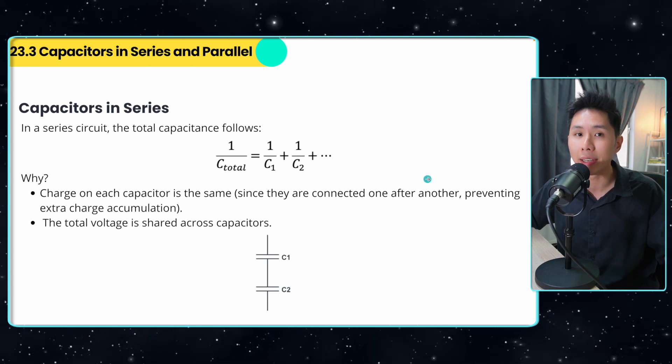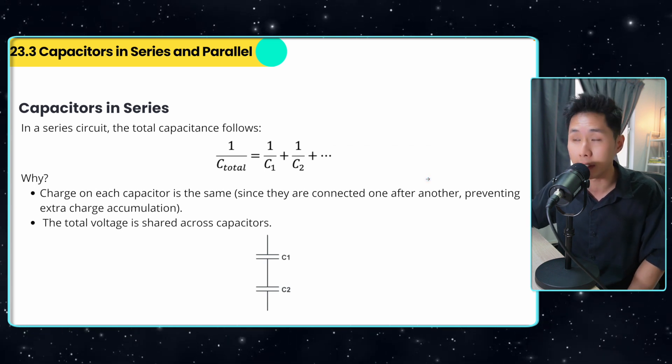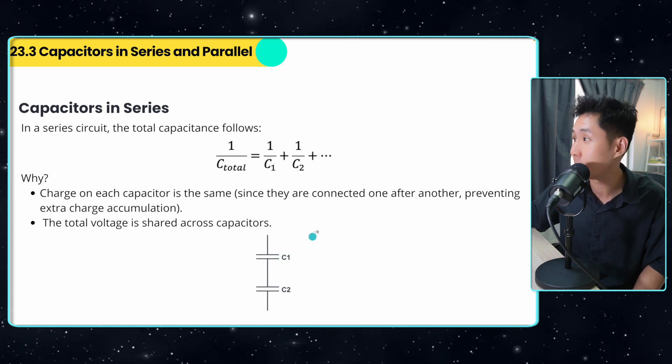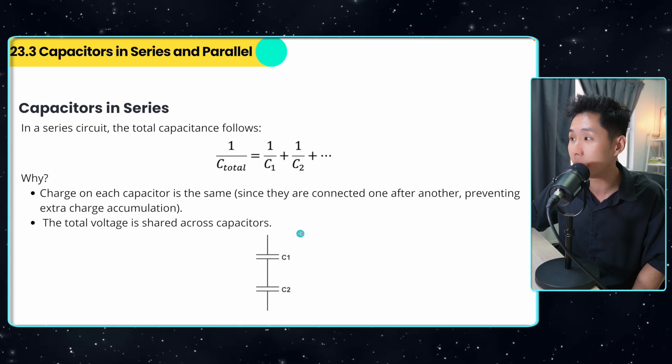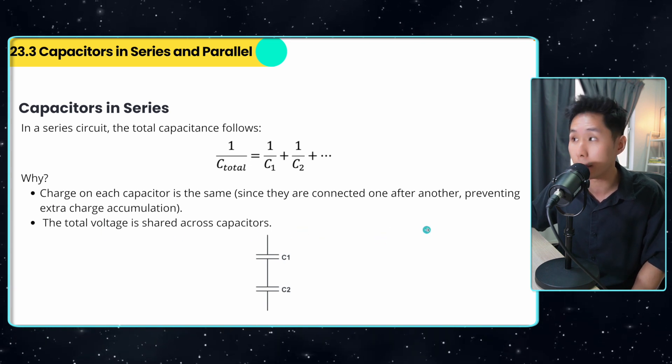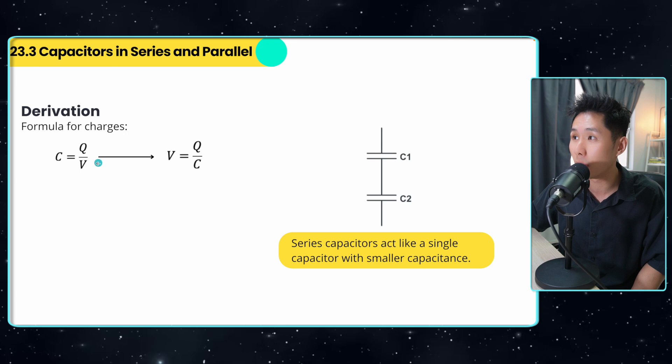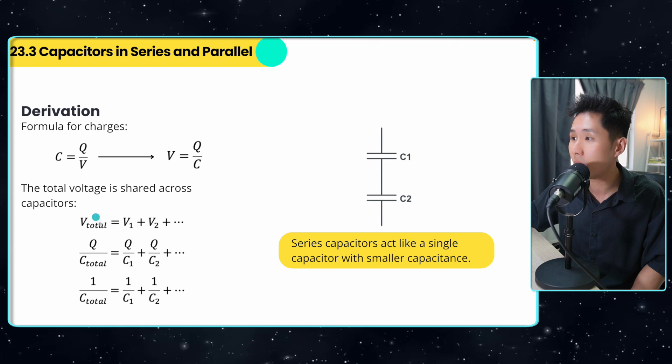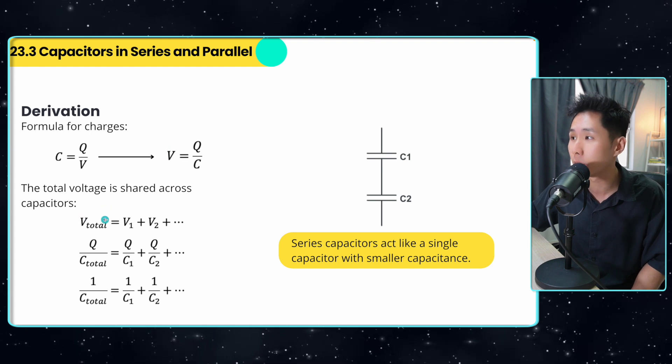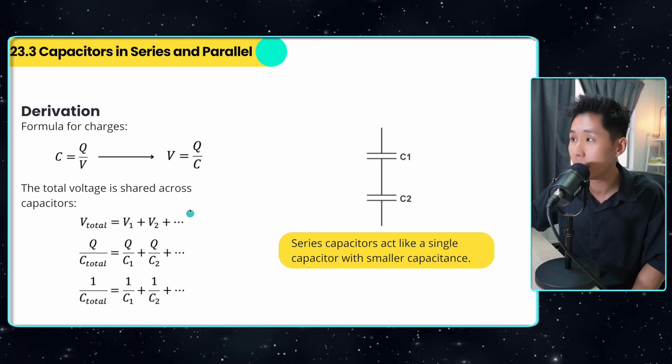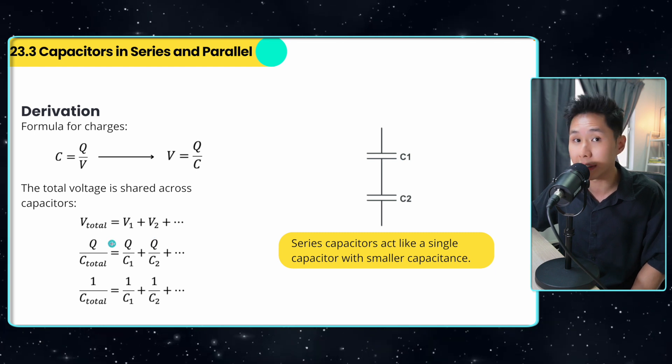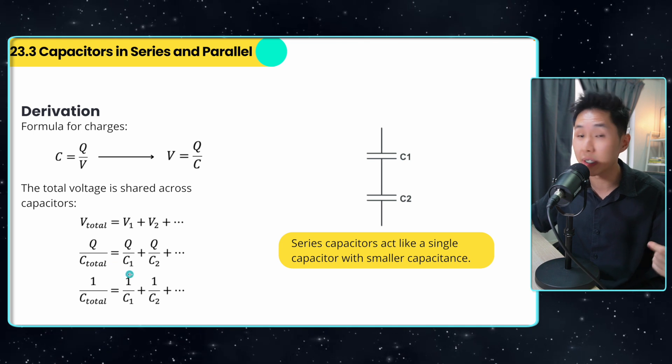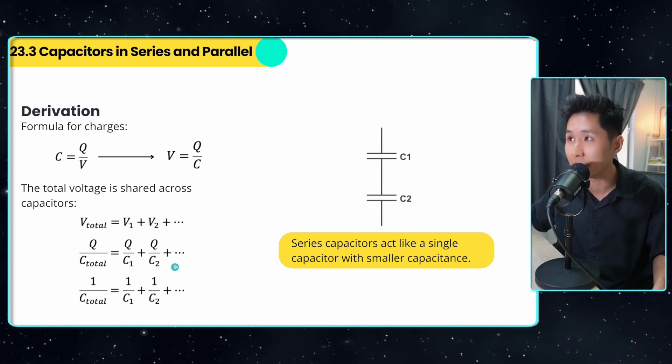What is slightly complicated is when capacitors are arranged in series. When they are arranged in series, the charge on each capacitor will be the same because they're connected one after another, and the total voltage is shared across the capacitors. So let's go back to the formula. Again, the capacitance formula. Now let's make V the subject. And because V is shared, V total will be equal to V1 plus V2. And you just substitute the equation into it. And Q is the same. And because of that, you would have seen that C total is equal to one over C1 plus one over C2.